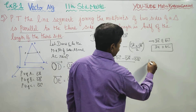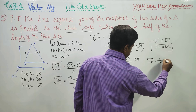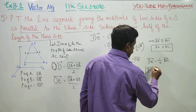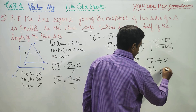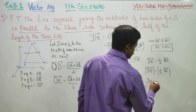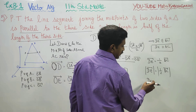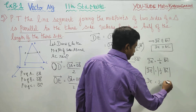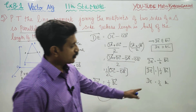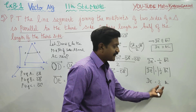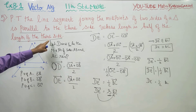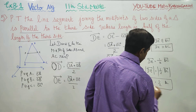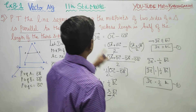DE vector equals 1/2 BC vector. Now I am going to take the magnitude. Magnitude means only the length. Magnitude of DE equals 1/2 magnitude of BC. The length of DE equals 1/2 times the length of BC. That is, DE equals half the length of the third side. This is result 2, and result 1 was DE parallel to BC.